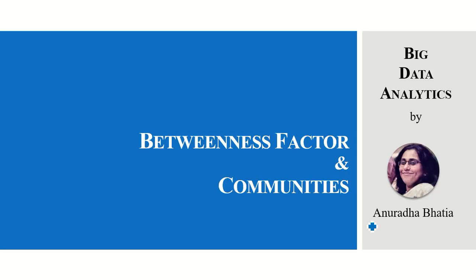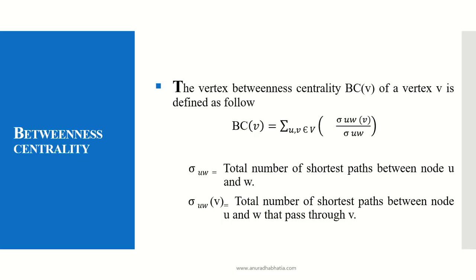Let's study the betweenness factor and communities for big data analytics. What is betweenness centrality? The vertex betweenness centrality (VCV) of a vertex V is defined as the summation over U and W of ρ(U,W,V) divided by ρ(U,W), where ρ(U,W,V) is the total number of shortest paths between nodes U and W that pass through vertex V, divided by the total number of shortest paths between U and W, whether V comes in between or not.